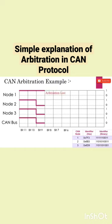At the 8th bit, both node 2 and node 3 are sending a recessive bit, so the bus state will remain at recessive.